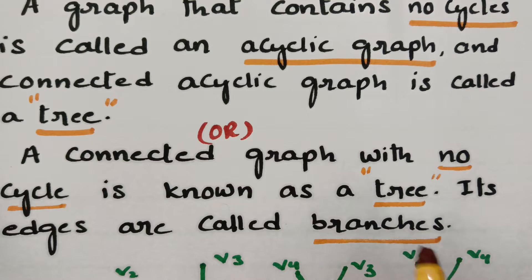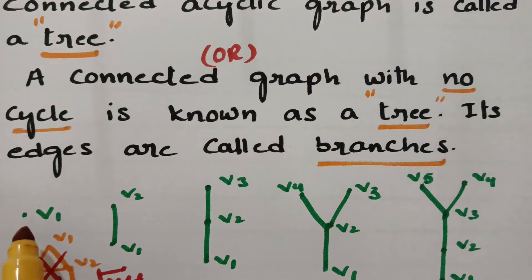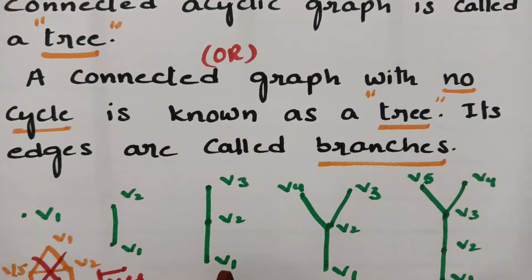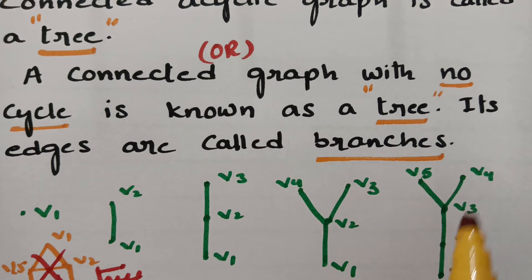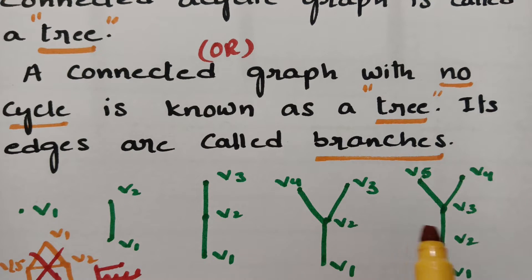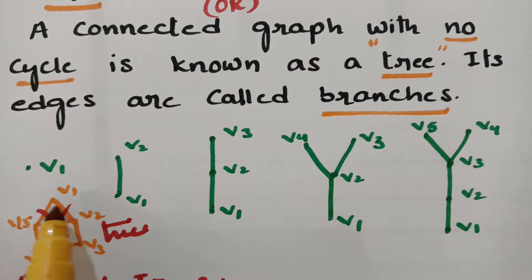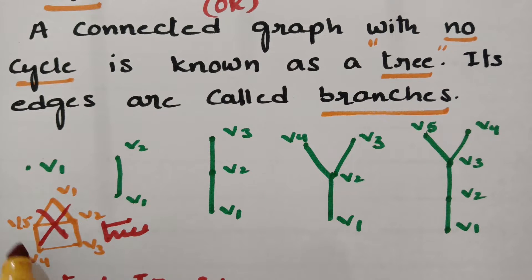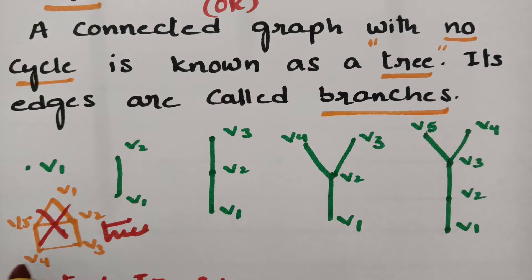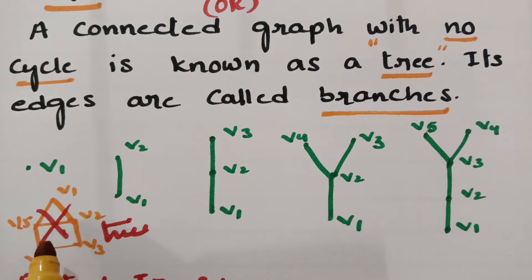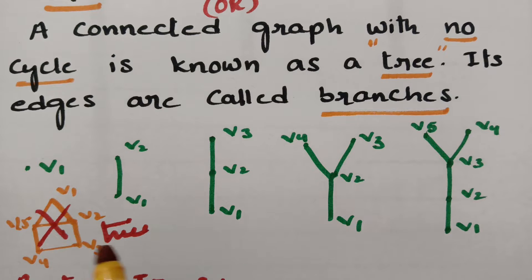The edges of a tree are called branches. For example, a single vertex is a tree, a tree with two vertices v1 and v2, a tree with three vertices v1, v2, v3, and trees with four and five vertices are all trees since they have no cycles. However, a graph with vertices v1 through v5 forming two cycles — v2, v3, v4, v5 and v1, v2, v5 — is not a tree. A graph with a cycle is not a tree at all.